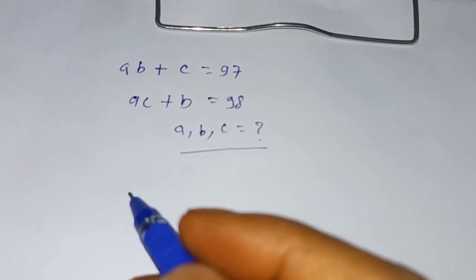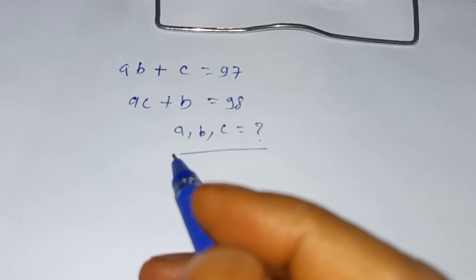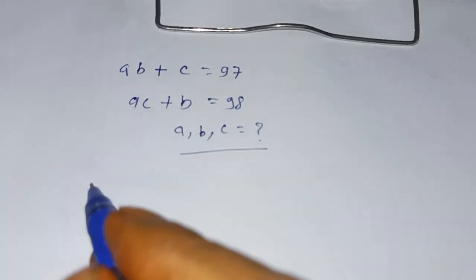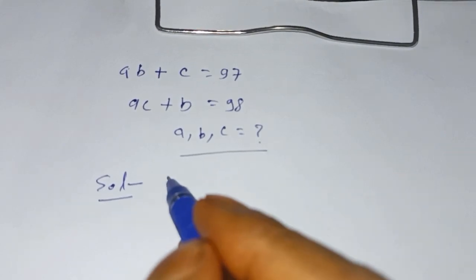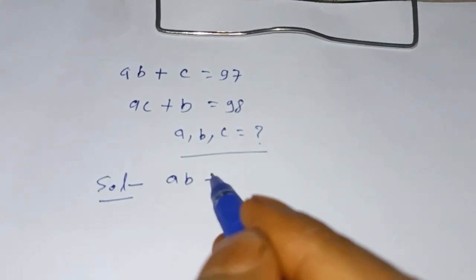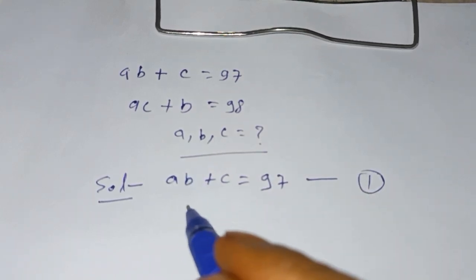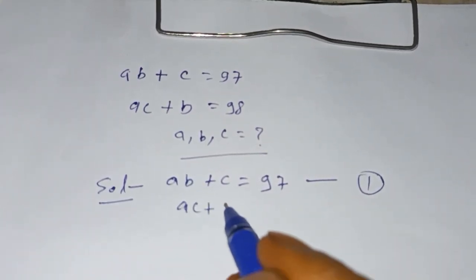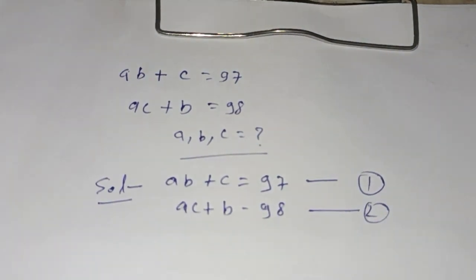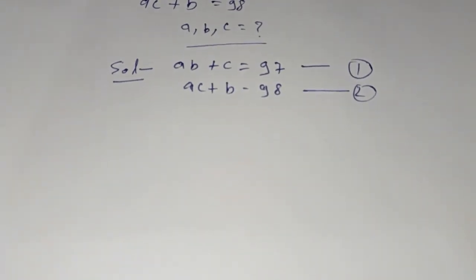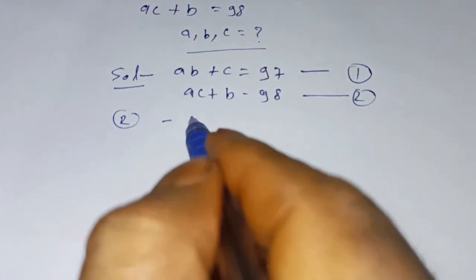The question is: ab + c = 97 and ac + b = 98. Find the value of a, b, and c. The solution: we write equation one as ab + c = 97, and equation two as ac + b = 98.